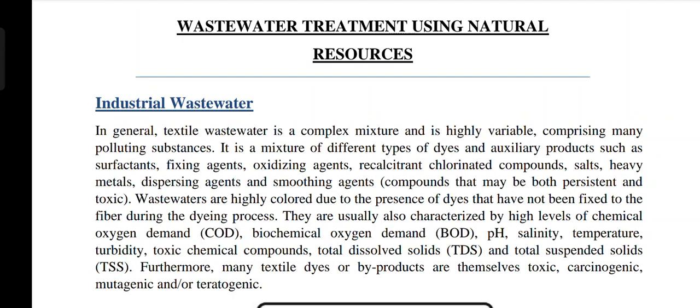Firstly, what is industrial wastewater? In general, textile wastewater is a complex mixture and is highly variable, comprising many polluting substances. It is a mixture of different types of dyes and auxiliary products such as surfactants, fixing agents, oxidizing agents, recalcitrant chlorinated compounds, salts, heavy metals, dispersing agents, and smoothing agents.